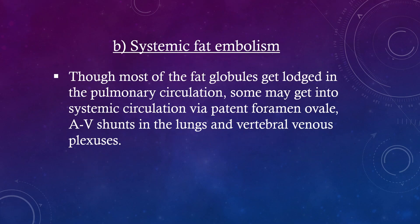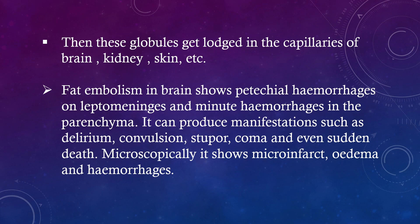Systemic Fat Embolism: Though most fat globules get lodged in the pulmonary circulation, some may get into systemic circulation via patent foramen ovale, arteriovenous shunts in the lungs, and vertebral venous plexus. These globules then lodge in the capillaries of the brain, kidneys, skin, etc. Fat embolism in the brain shows petechial hemorrhages on leptomeninges and minute hemorrhages in the parenchyma. It can produce manifestations such as delirium, convulsion, stupor, coma, and even sudden death.